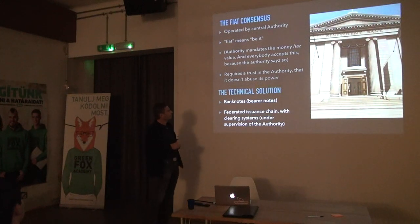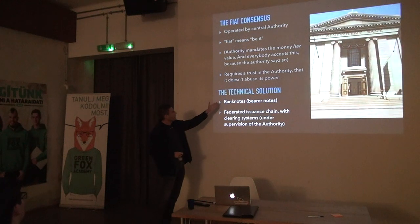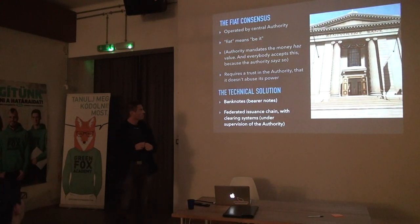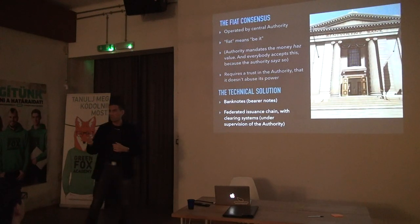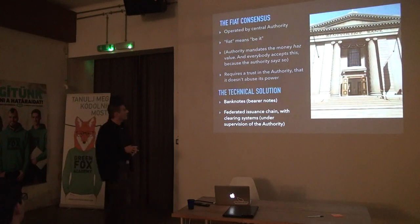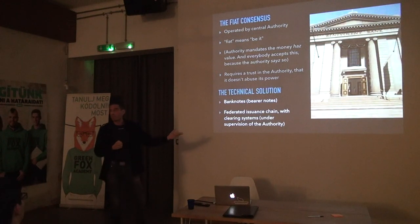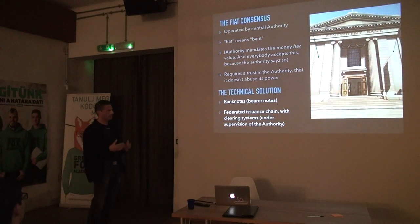The technical solution to the problem — that we have to know the state, and it cannot be printed ad infinitum — is that you either have banknotes that cannot be forged, so if someone shows a banknote I can be sure that authority printed it and that person is entitled to that money. The other is bank money, which is purely digital. What stops the bank from printing any amount of money? They are connected into a federated system with a central bank that regulates the other banks.